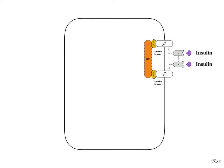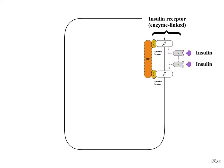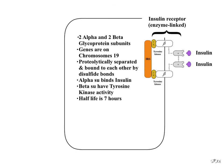The primary insulin targets are the liver, skeletal muscle, and adipose tissue. The insulin attaches to the insulin receptor, which is a combination of 4 glycoprotein subunits held together by disulfide linkages.